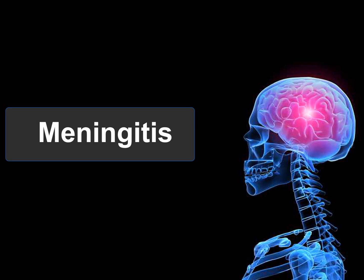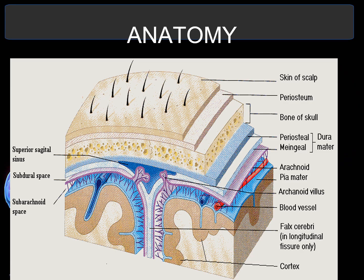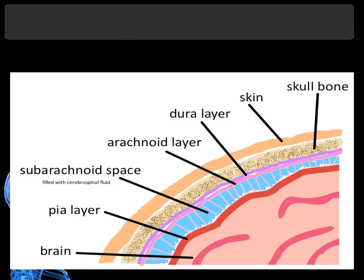We need to discuss communicable diseases regarding meningitis. This is the anatomy of the central nervous system. The meninges consist of three layers that provide protection, cushioning, and support to the brain and spinal cord. We have the dura mater, the periosteal layer, the meningeal layer, and the arachnoid mater. These will be discussed clearly in the succeeding slides.